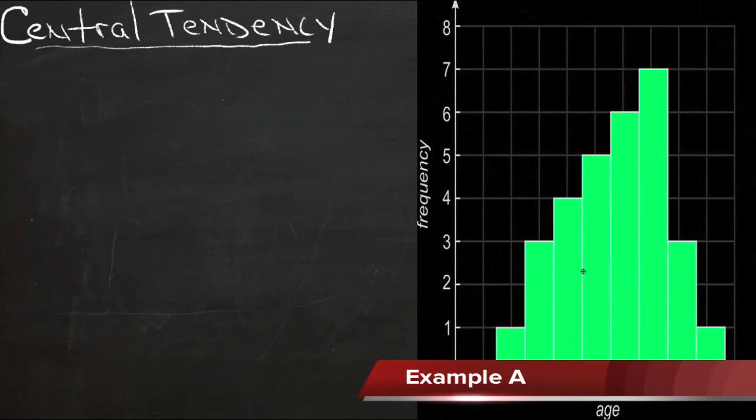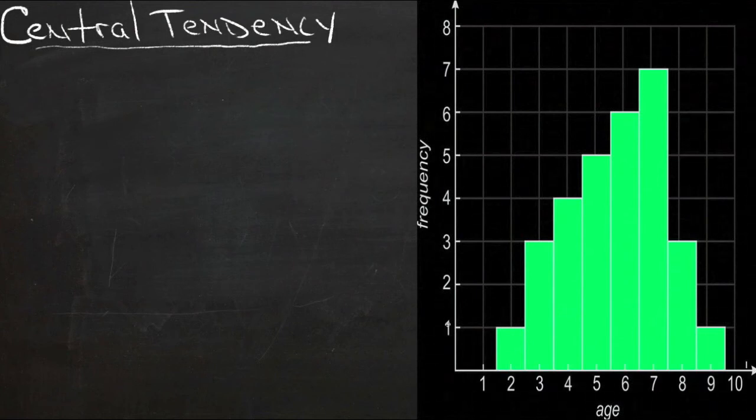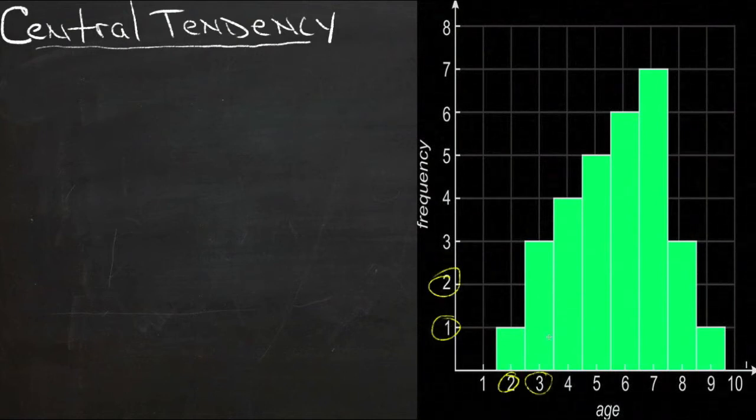The table you see on your right is ages and numbers of customers that came to a face painting table at a church bake sale. We had one person who came in that was two years old, and we had two who came in that were three years old, and so on and so forth.